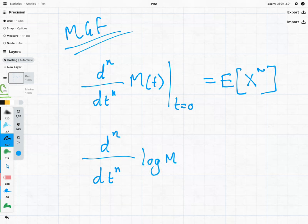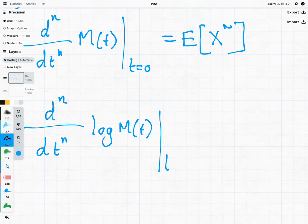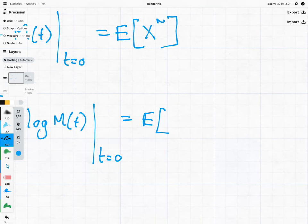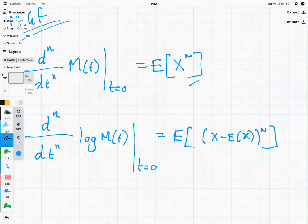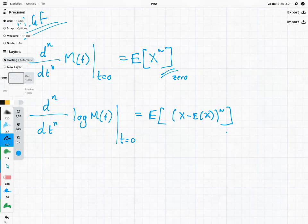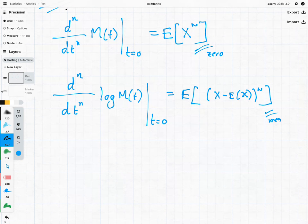And we found that when we set this equal to zero, we got the moments, but this time the moment around the mean. So moment generating function gave us the means around zero, whereas your cumulative generating function is giving us the moment about the mean. And another way of denoting this is with c.